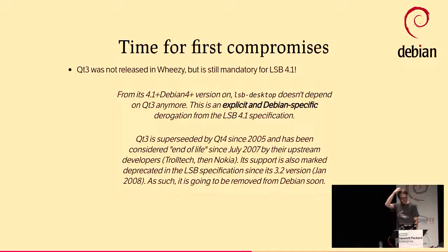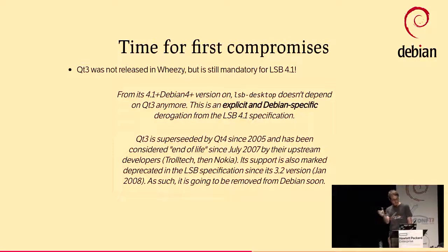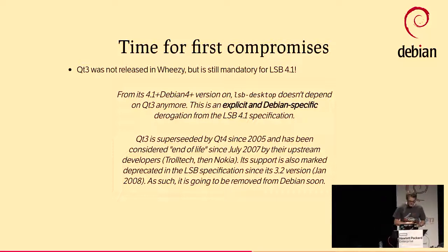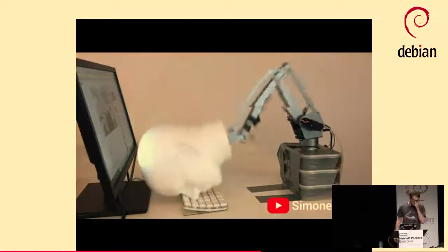Then there were the first compromises. Qt3 was not released in Wheezy, but it's still mandatory for LSB 4.1 — which was the LSB release at the time. There was a news entry explaining we had an explicit Debian-specific derogation from the LSB 4.1 specification. If you wanted an LSB package that needed Qt3, you needed to go find it in Snapshot. But if you look at the dates — it's 2012 and Qt3 was deprecated since 2005. That's quite a long time in the history of software.